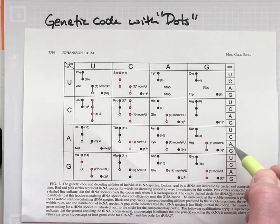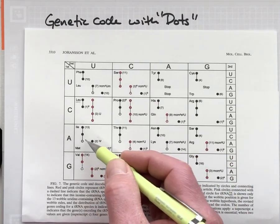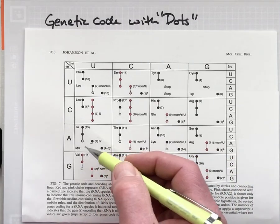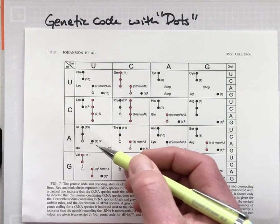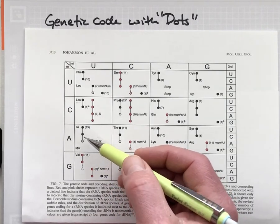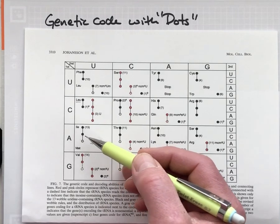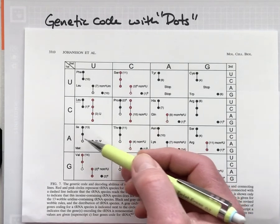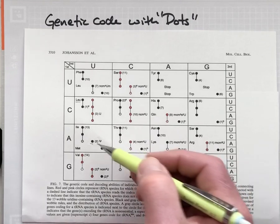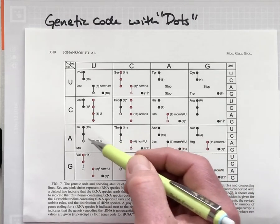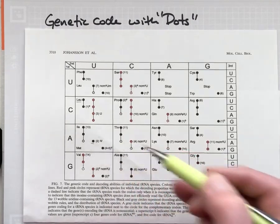The wobble hypothesis would tell you that you can decode AUA, but in fact because it's open here, that means it does not decode that particular codon very well. So it's really restricted to AUU and AUC, letting AUA be decoded by this second isoleucine-carrying codon.